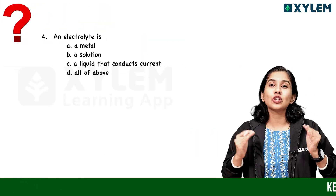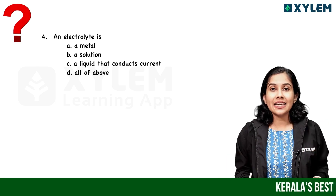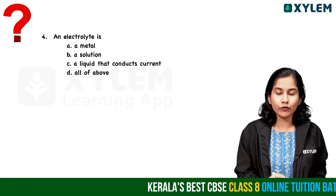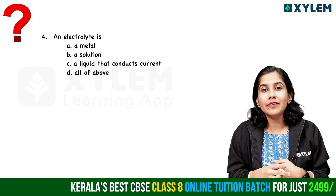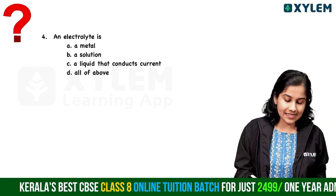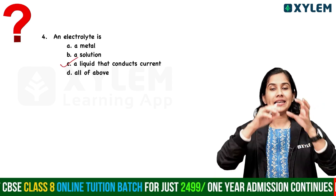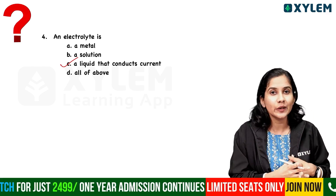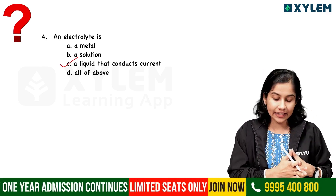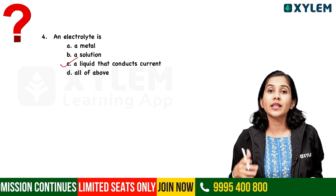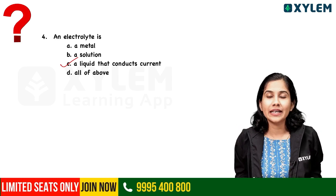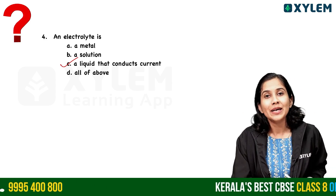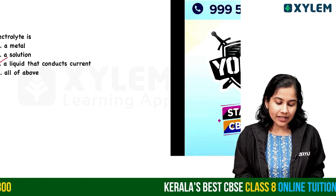The fourth question: An electrolyte is — a metal, a solution, a liquid that conducts current, or all of the above? An electrolyte is a liquid that conducts electric current. Chemical reactions occur in the solution. So an electrolyte is a liquid that conducts current.